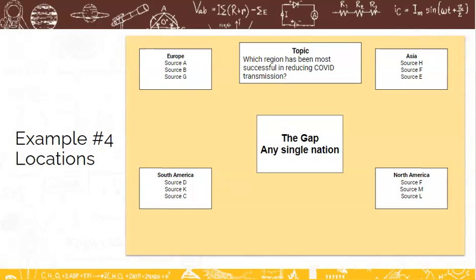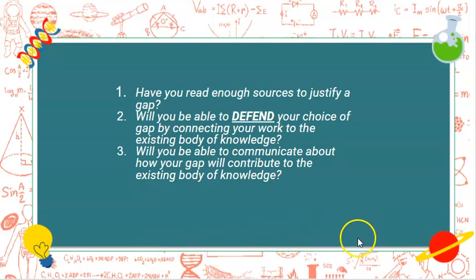As we move forward and try to identify our gap, we need to ask ourselves a series of questions. One, have you read enough sources to justify a gap? If you've only looked at five or six sources, you're not going to be able to adequately identify that there's a gap related to your study. Second question, will you be able to defend your choice of a gap by connecting your work to the existing body of knowledge? You need to not only say, here is my gap, but you also need to defend it by linking it to the work of other people.